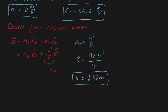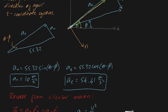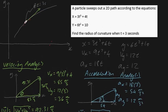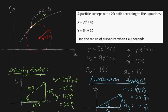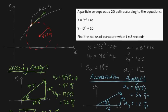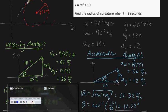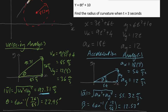Just before I end this video, I want to revisit the intuition. Basically, I've shown that this particle's path can be viewed as part of a circular path with a radius of 852 meters. This is a very tough question, and you'll really appreciate how important this concept is when we later develop equations using instantaneous centers of velocity.